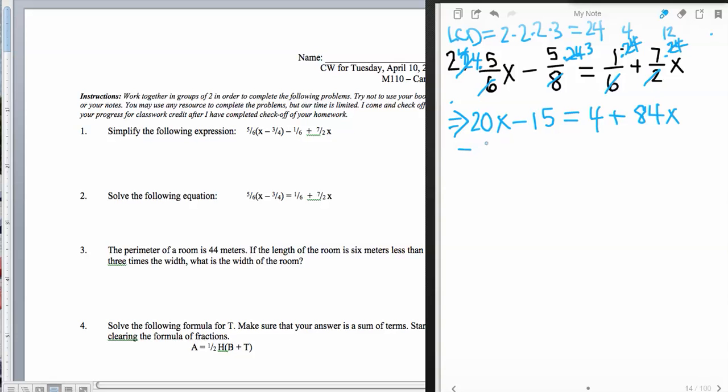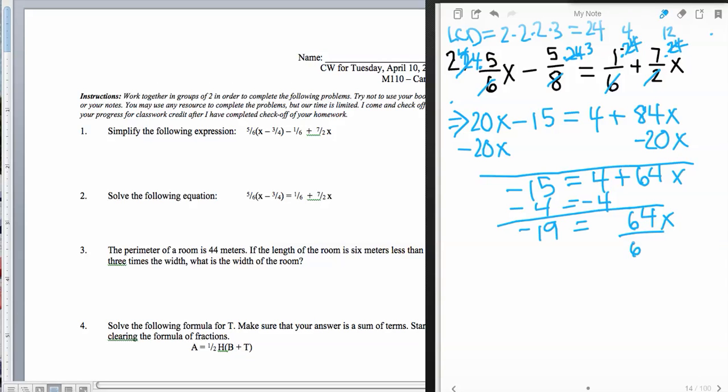Now we have an equation that has absolutely no fractions in it. And we can go ahead and we can move the variables together. So we have an add a negative 20x and add a negative 20x. And therefore we'll have a negative 15 is equal to a 4 plus 64x. And then we can move the 4 over to the other side. And now we see that we have a negative 19 is equal to a 64x. And then finally multiplying by the reciprocal, which looks like division because it is, we get our final answer. And our final answer is x equals negative 19/64.